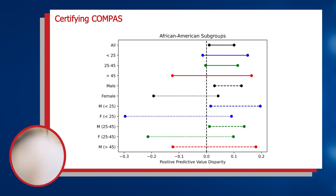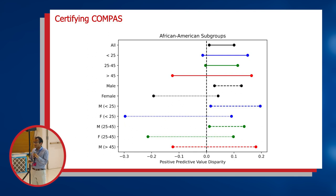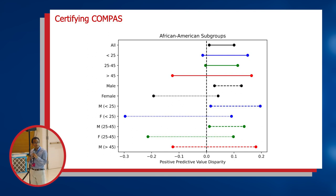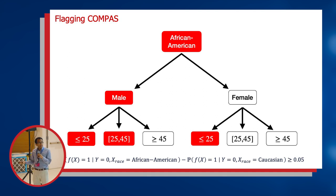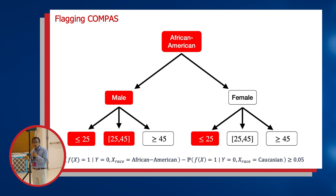But when we drill down further, that guarantee doesn't hold uniformly over all the various protected subgroups of this subpopulation. For example, I can't tell you that African American women under the age of 25 suffer no PPV disparities. Looking at the flagging problem, ProPublica identified that the false positive rate for African American offenders was higher than for Caucasian ones. Here we can consider a more granular description — localizing the fairness disparities to the actual root cause, which in this case would appear to be young African American defendants who clearly show a higher false positive rate.